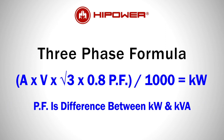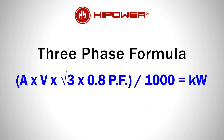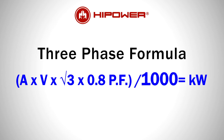We also introduce power factor — the difference between the available kilowatts and the apparent power produced within the generator, shown as PF. The formula to determine kilowatts for a three-phase generator is: amps times volts times root 3 times the power factor, which is usually 0.8 for most three-phase generators, then divided by 1000 to give the kilowatts.